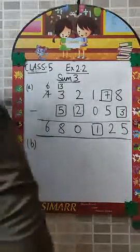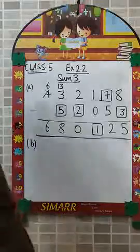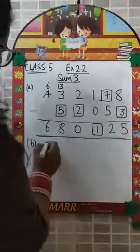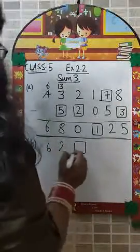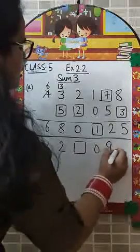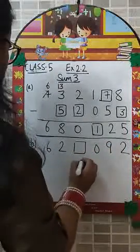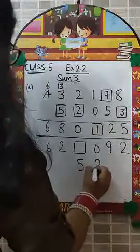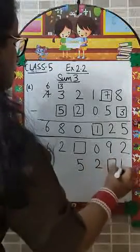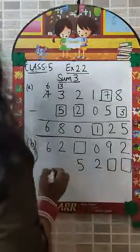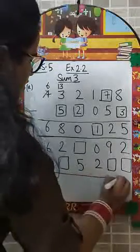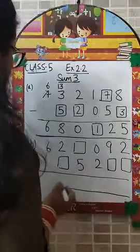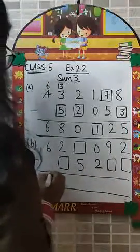Similarly, we can try the B part. What is there in the B part? We have 6, 2. Here there is a missing number. Next we have 0, 9, 2. Next we have here 5. Here we have 2. And this is the missing number. Here we also have to find this. Here we are subtracting. And what we are getting after subtraction, we have here 5.